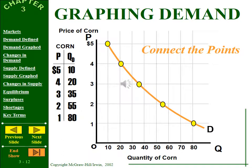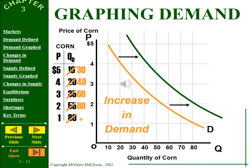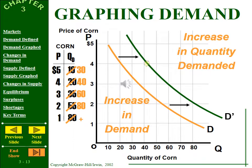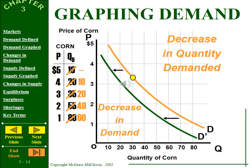Here's a standard demand curve drawn out — you can see the plotted points showing the inverse relationship between price and quantity demanded. An increase in demand shifts the curve to the right, from D to D prime. A decrease in demand shifts the entire curve down and to the left, causing price and quantity to fall at the equilibrium point.